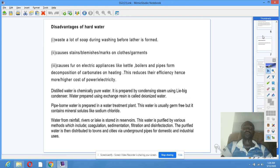It causes fouling of boilers. Distilled water is chemically pure water. It is prepared by condensing steam using a Liebig condenser. Water prepared using ion exchange resin is called deionized water.